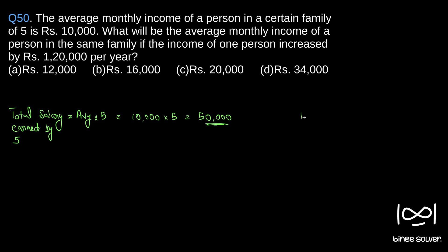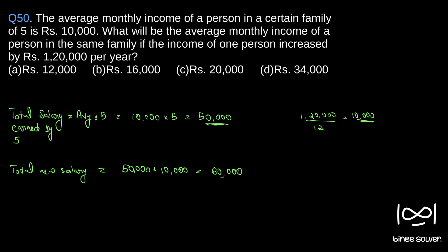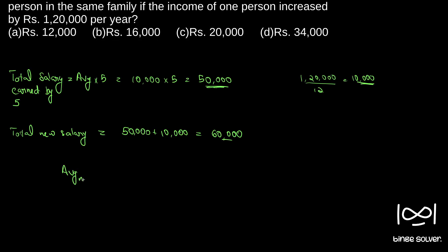So the increase per month is 1,20,000 divided by 12, which is 10,000. So one person's salary increased by 10,000 per month. The new total salary is 50,000 plus 10,000, which is 60,000. The new average will be 60,000 divided by 5 people, which is 12,000 rupees.